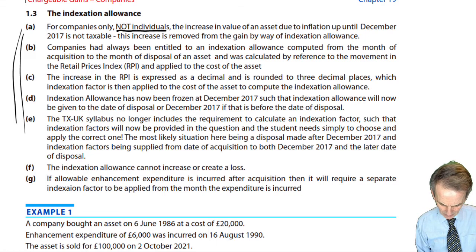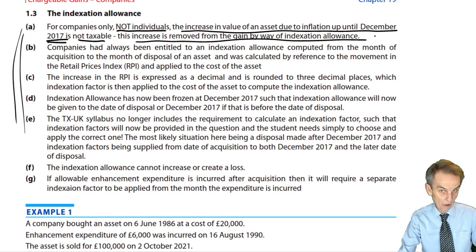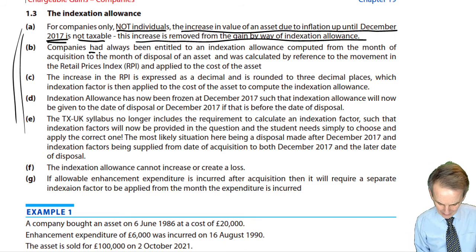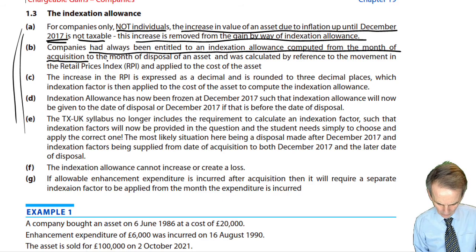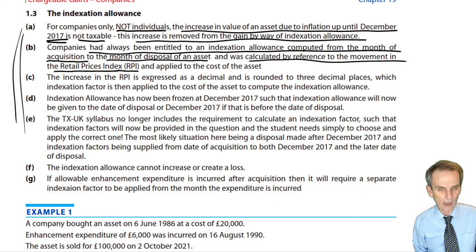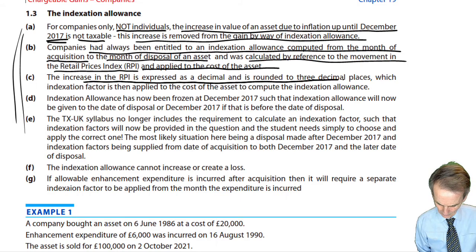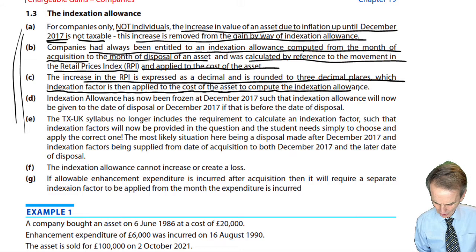For companies only, not individuals, the increase in value of an asset due to inflation — but only up to December 2017 — is not taxable. This increase is removed from the gain by way of the deduction of indexation allowance. Companies had always been entitled to an indexation allowance, computed from the month of acquisition through to the month of disposal of an asset, calculated by reference to the movement in the RPI — the Retail Prices Index. The increase in the RPI is expressed as a decimal, rounded to three decimal places, which indexation factor is then applied to the cost of the asset to compute the indexation allowance.